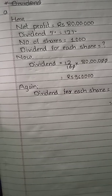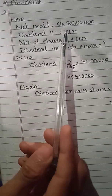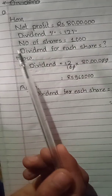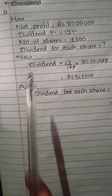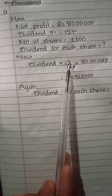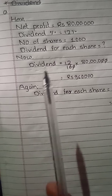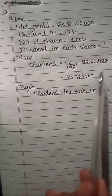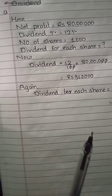Solution: Net profit is Rs. 80 lakhs. Dividend percent is 12%. Number of shares is 1,000. Dividend amount = 12% of 80 lakhs = 12/100 × 80 lakhs. Dividend amount = Rs. 9,60,000. Dividend for each share = 9,60,000 ÷ 1,000 = Rs. 960.